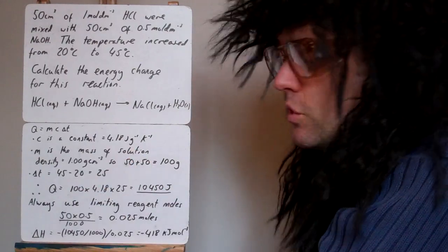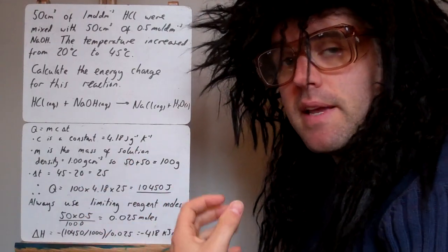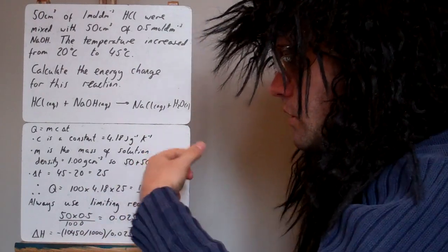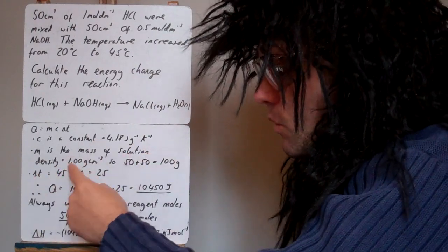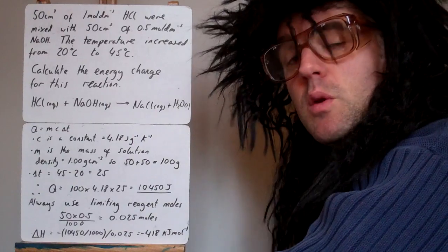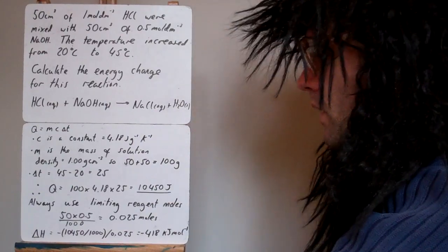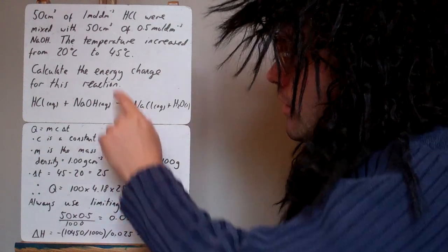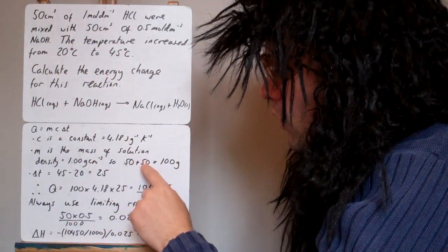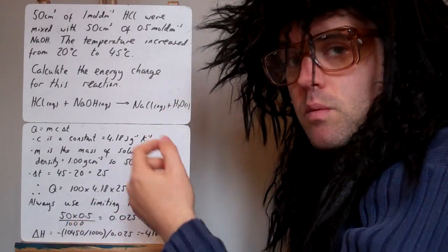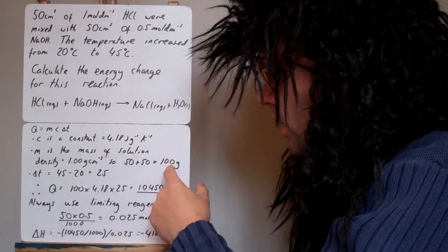M is the mass of the solution, because that's what the surroundings are. The reaction is taking place in the solution. So the solution is the surroundings. So the density of water is 1 gram per centimeter cubed, so we're making the presumption that the density of our solution is that as well. So we have two lots of 50 mixed together, 50 centimeters cubed and 50, so all together that'd be 100 grams, because each centimeter cubed would weigh a gram. Okay, it's got 100 grams.